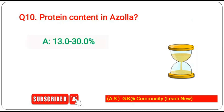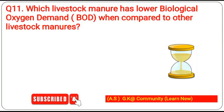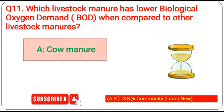Tenth question: what is the protein content in azolla? The answer is 13 to 30%. Eleventh question: which livestock manure has lower biological oxygen demand (BOD) when compared to other livestock manures? The answer is cow manure.